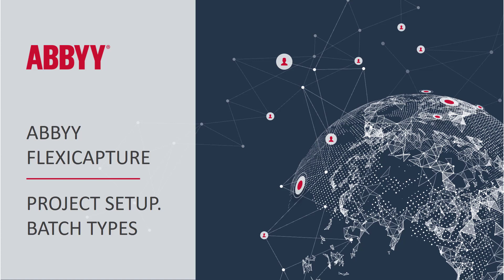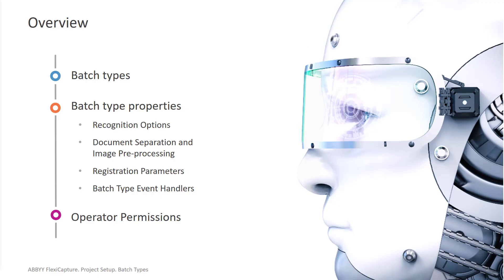Next up is ABBYY FlexiCapture Batch Types. Batch types are set up in the Project Setup Station. We'll talk about what a batch type consists of: recognition options, preprocessing settings, registration parameters, event handlers, and operator permissions.